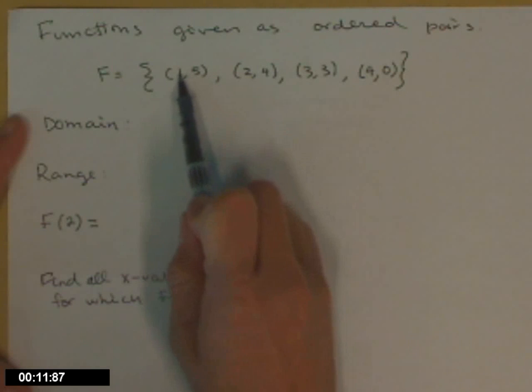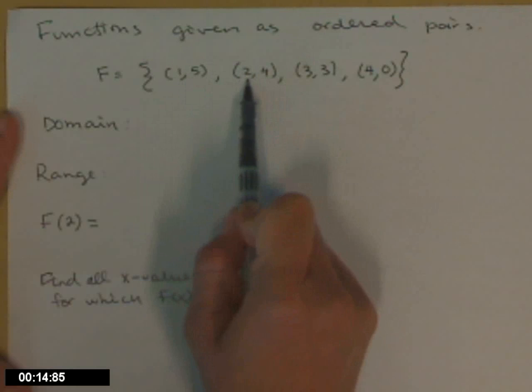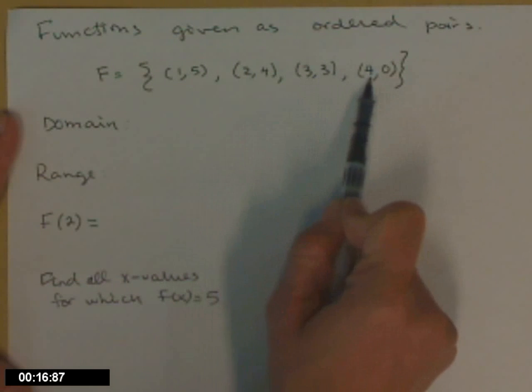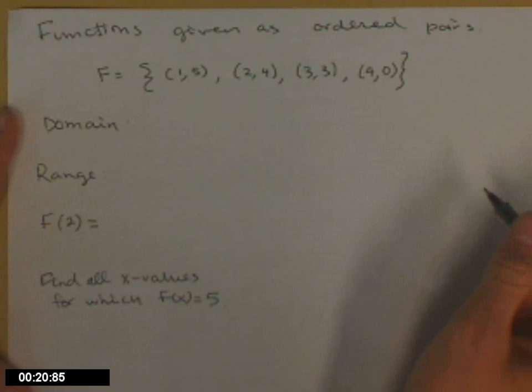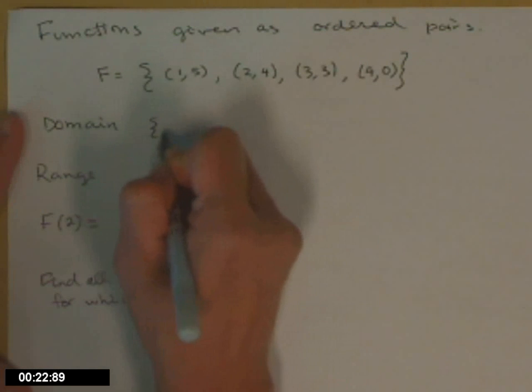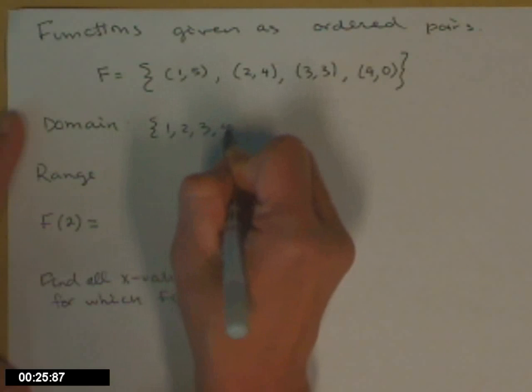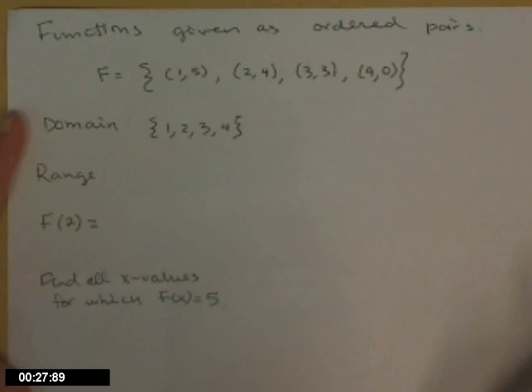But the only x values where this function is defined is x equals 1, x equals 2, x equals 3, and x equals 4, and nothing in between. So interval notation is not appropriate here. Instead, I should just list the x values where my function is defined.